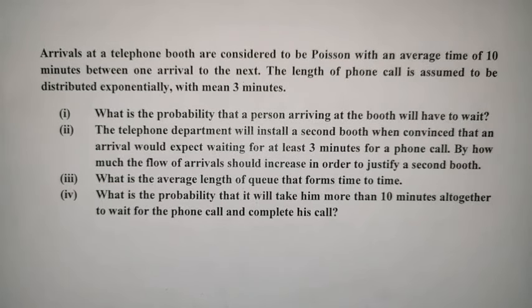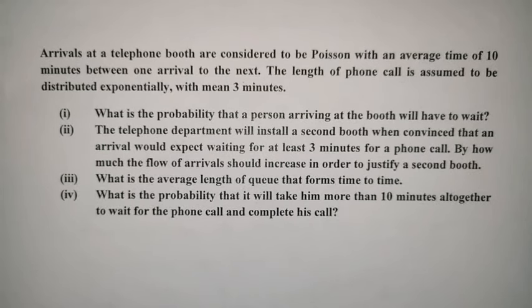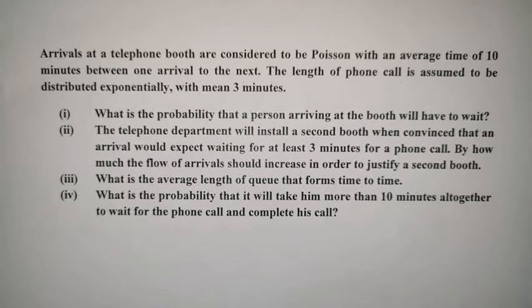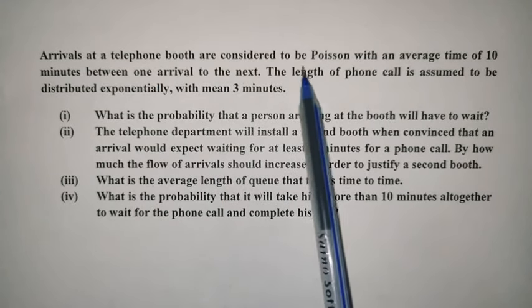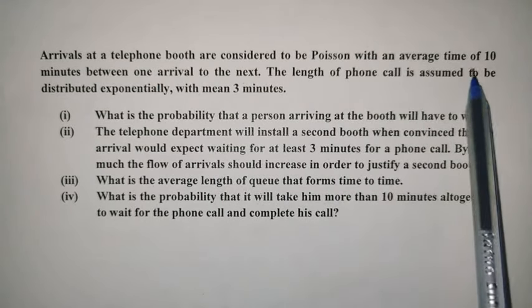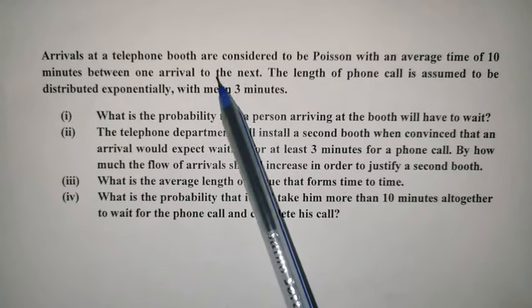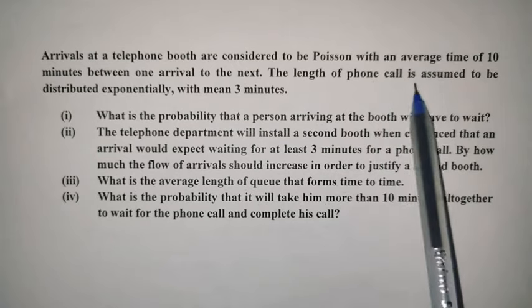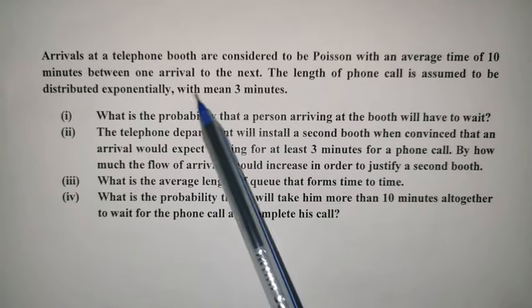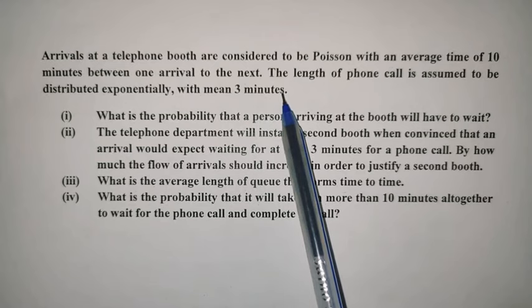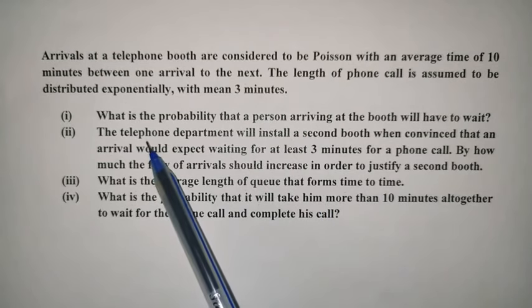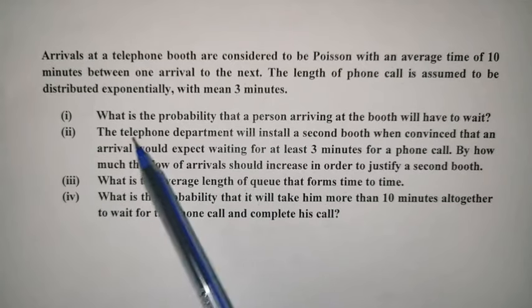Let us solve one more problem on the M/M/1 type of queuing system. This is a realistic problem: arrivals at a telephone booth are considered to be Poisson with an average time of 10 minutes between one arrival and the next. The length of the phone call is assumed to be distributed exponentially with a mean of three minutes.